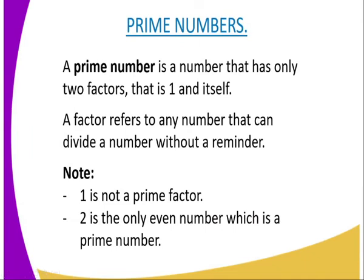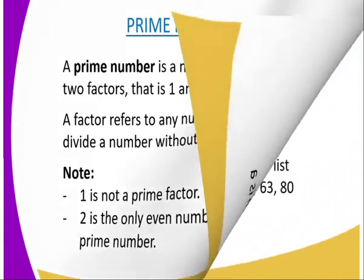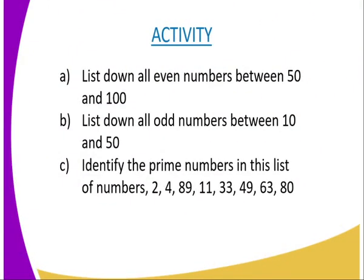Now let us look at prime numbers. A prime number is a number that has only 2 factors — that is 1 and the number itself. A factor refers to any number that can divide a number without a remainder. Note: 1 is not a prime number, and 2 is the only even number which is a prime number.